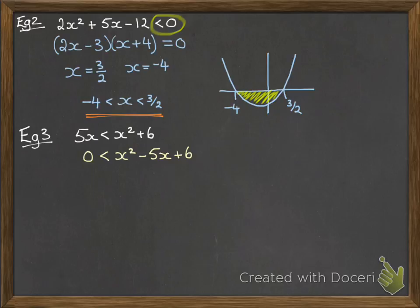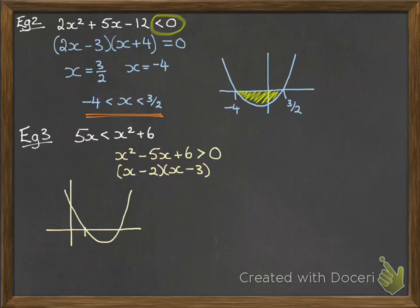So our quadratic you can see there is going to be bigger than zero. Zero is the smaller thing, so we rewrite that on the right hand side like that. Now factorize as if this was equal to zero, so we get our roots being two and three.